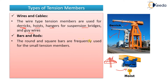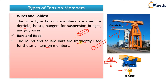Then we have bars and rods. Round and square bars are frequently used for small tension members. Round bars have a circular cross section, and square bars have a square cross section like this. Both shapes are frequently used for smaller tension members in structures.